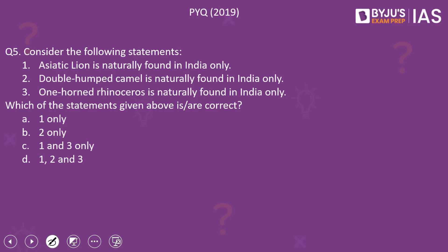Moving on to the last question of the day — a question from the UPSC 2019 prelims General Studies Paper 1. Consider the following statements: first, the Asiatic lion is naturally found in India only; second, the double-humped camel is naturally found in India only; third, the one-horned rhinoceros is naturally found in India only. Which of the statements given above is or are correct? Please have a look at the options given.